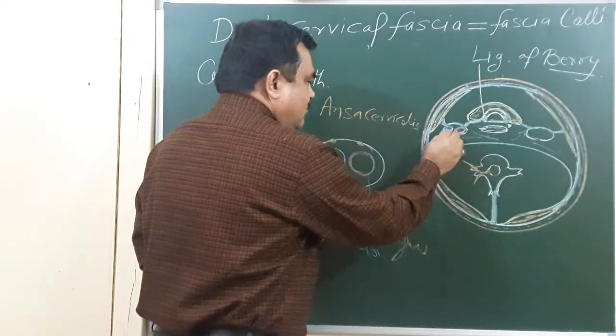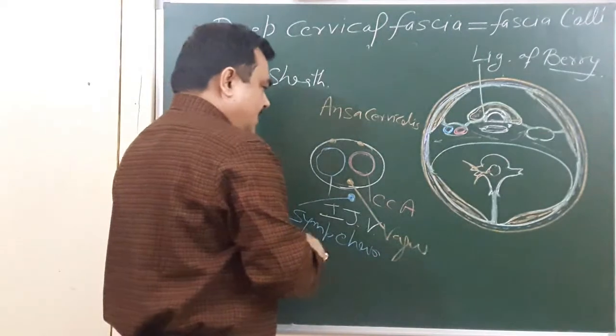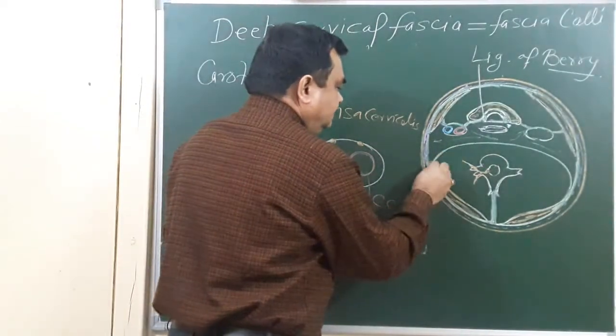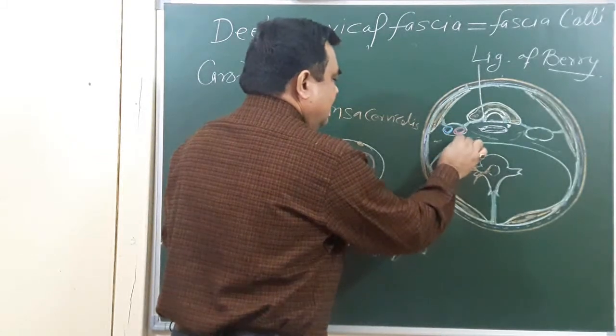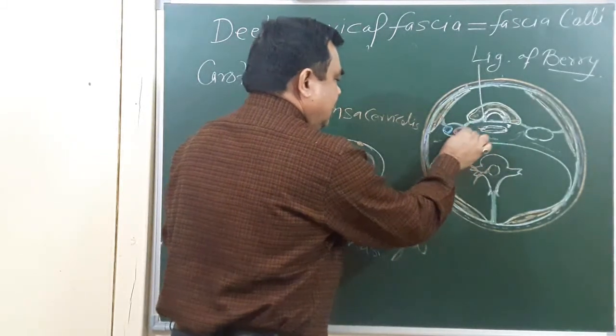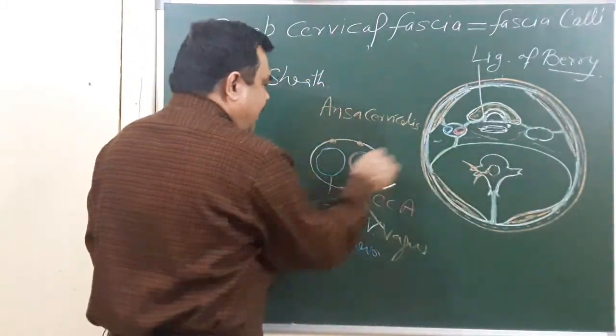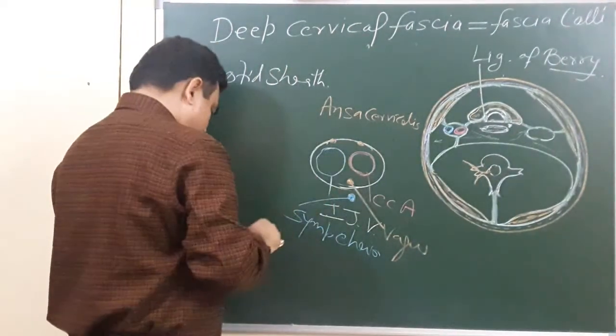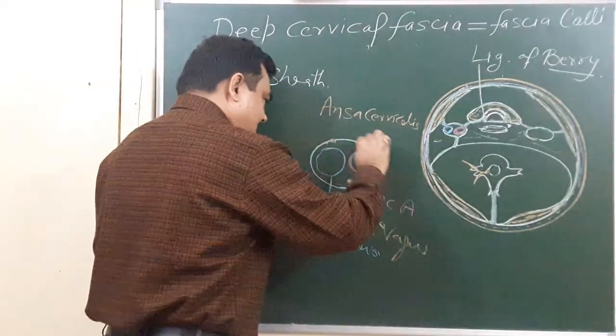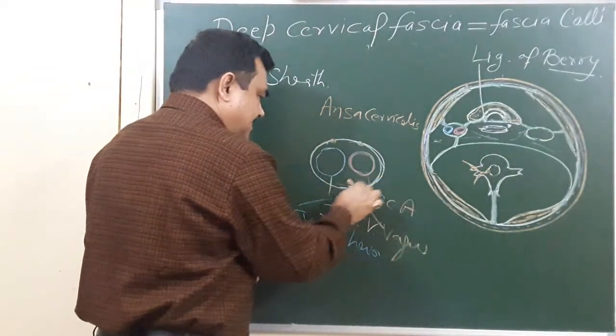This posterior layer is formed by extension of the pre-vertebral fascia. The lateral part of this fascia is thin, and the medial part is thick.